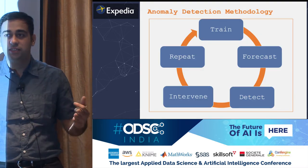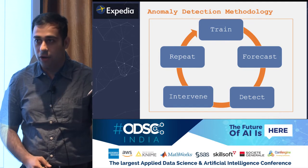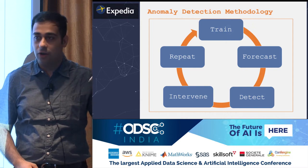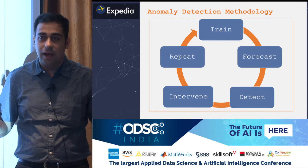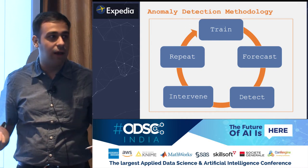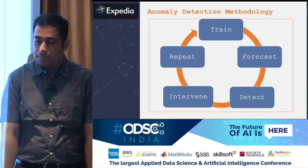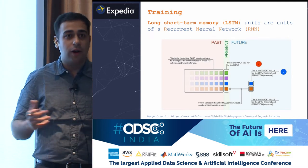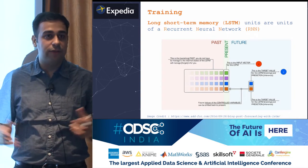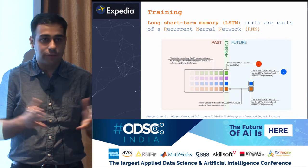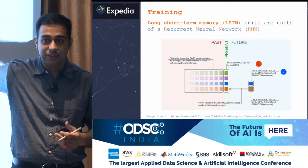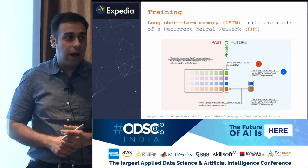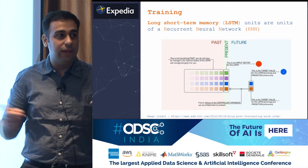The anomaly detection methodology comprises five steps: training an adaptive LSTM model, using that model to forecast the next point in the time series, detecting whether the actual value is anomalous, providing a provision for human feedback, and repeating all four steps cyclically. We use recurrent neural networks — particularly LSTMs — to forecast the next point in the time series. LSTMs are very well suited for this task. What I will focus on is how we trained an adaptive LSTM that could span millions of time series.